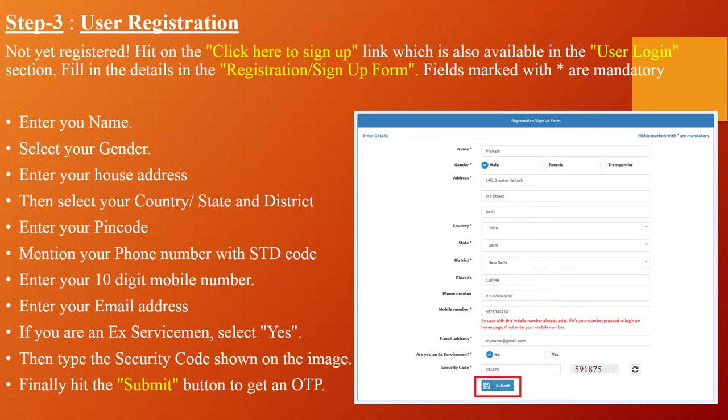User Registration Details: If you have not yet registered, click the 'Click here to sign up' link available in the user login section. Fill in the details in the registration form — fields marked with stars are mandatory. Enter your name, select your gender, enter your house address, select your country, state and district, enter your PIN code, mention your phone number with STD code, enter your 10-digit mobile number, and enter your email address.